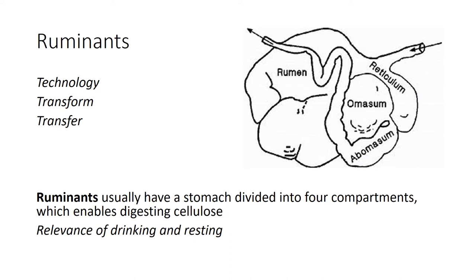The key device of the ruminant system is its stomach architecture — a system made up of four different compartments: the rumen, the omasum, the reticulum, and the abomasum. These four stomachs, different from what humans have, enable digesting plant resources including cellulose and lignin. Feed moves from one stomach to another and even comes back to the mouth for re-chewing, so there is a constant movement of feed within the system that makes it digestible by the end of the process.